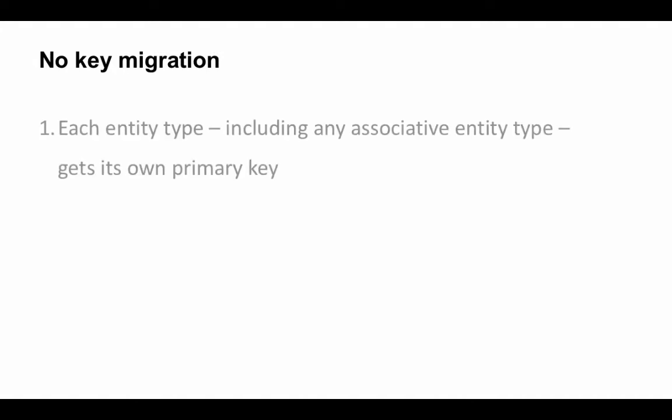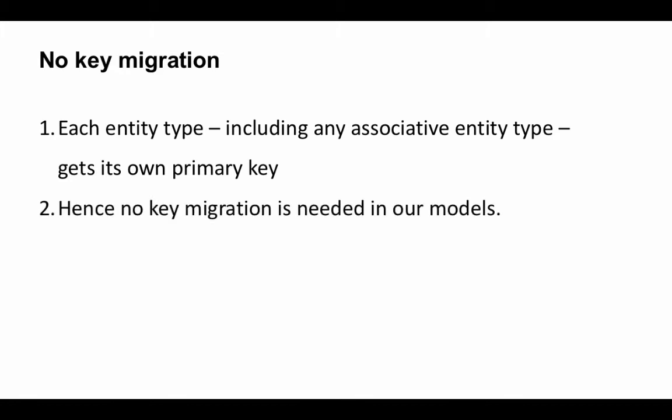Giving every entity type its own primary key is a cleaner approach. So that's what we'll be doing in this project, and I strongly recommend you do the same in your project. Our entity relationship diagram will not have any key migration at all. In fact, if you have key migrations, go back and change the diagram so that no key migration is involved. If you give every entity type its own primary key, there will be no need for key migration at all.